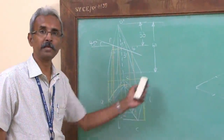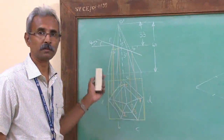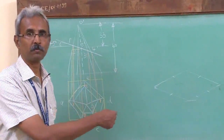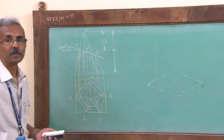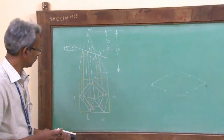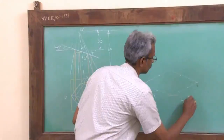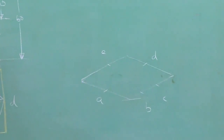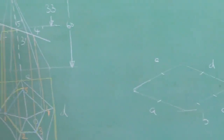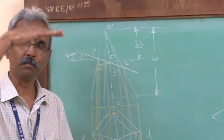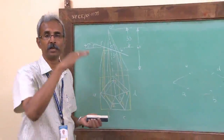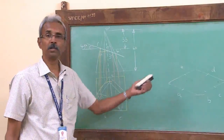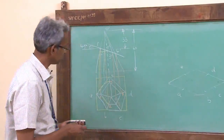Now I need to draw the isometric view of this truncated pyramid. First, I draw the isometric view of the base of the pyramid. In the earlier frustum case, we enclosed everything in a box and drew the top face on the box's top surface. But here, because the cutting plane is inclined, you cannot enclose it in a box. So a different method is needed to locate each section point.